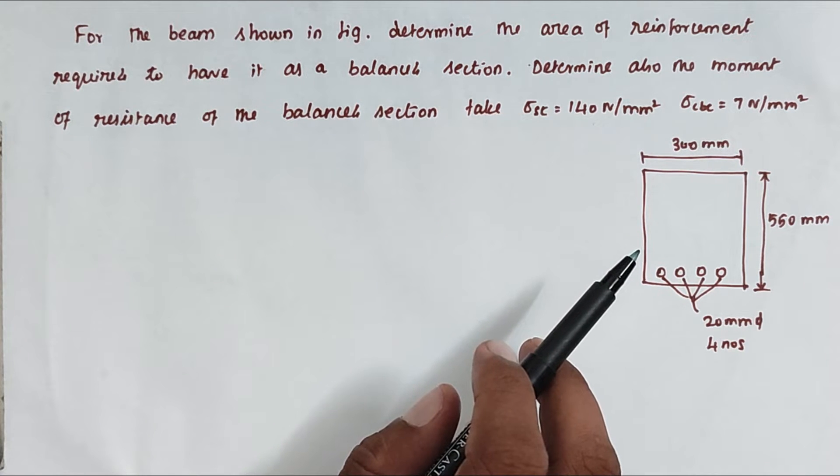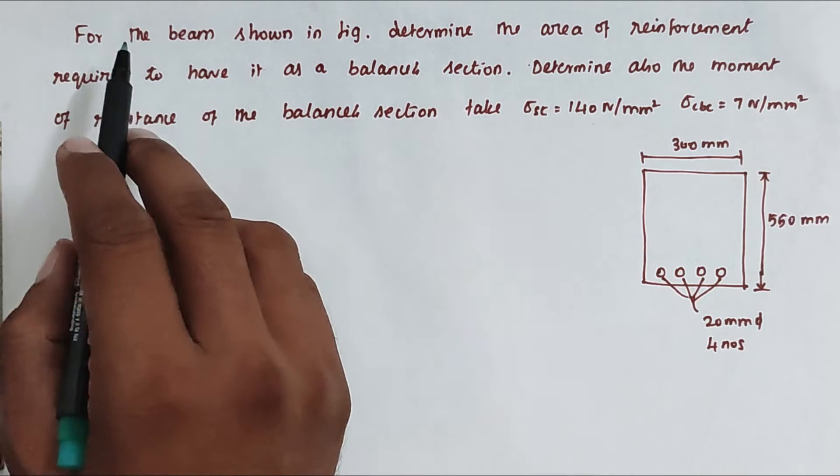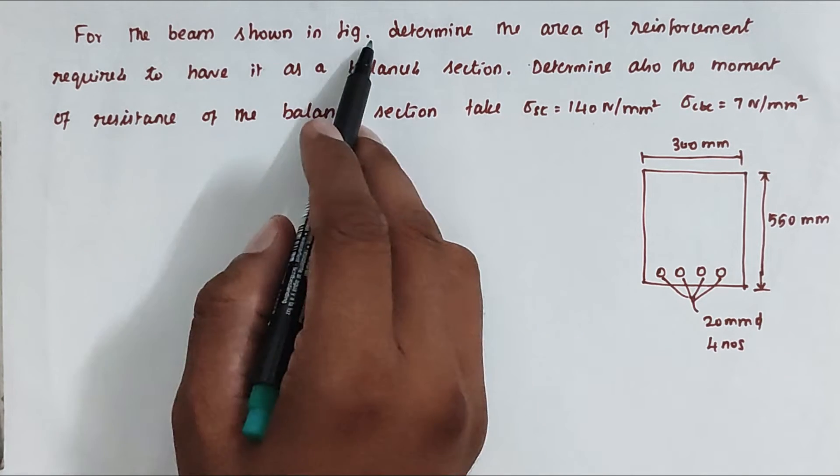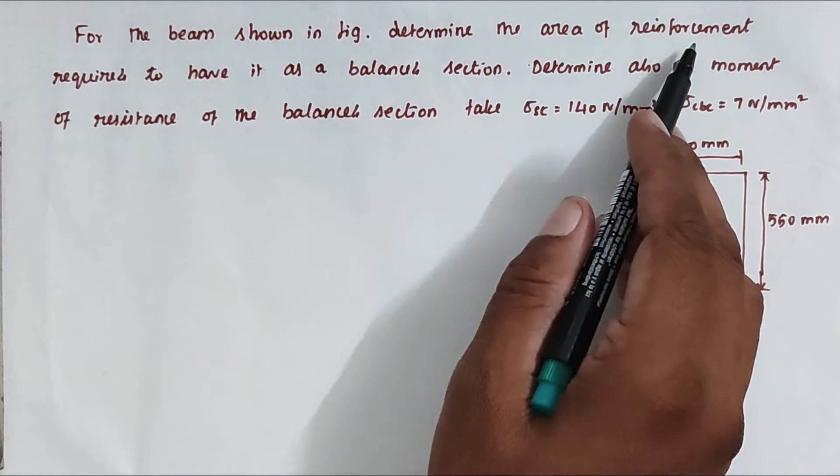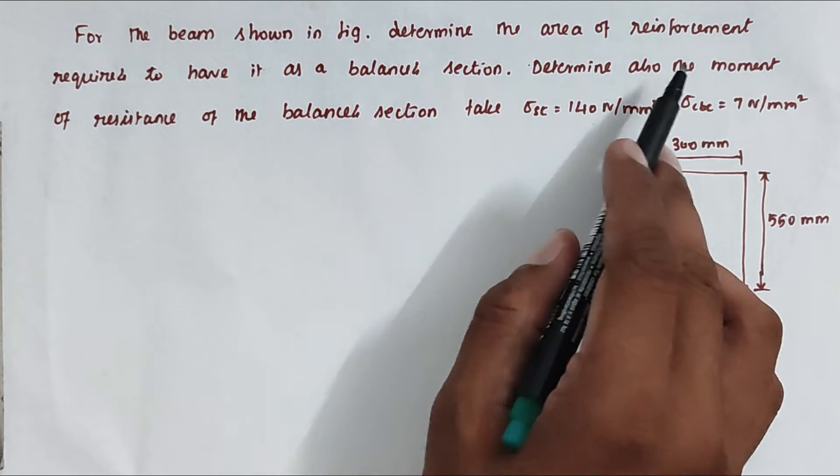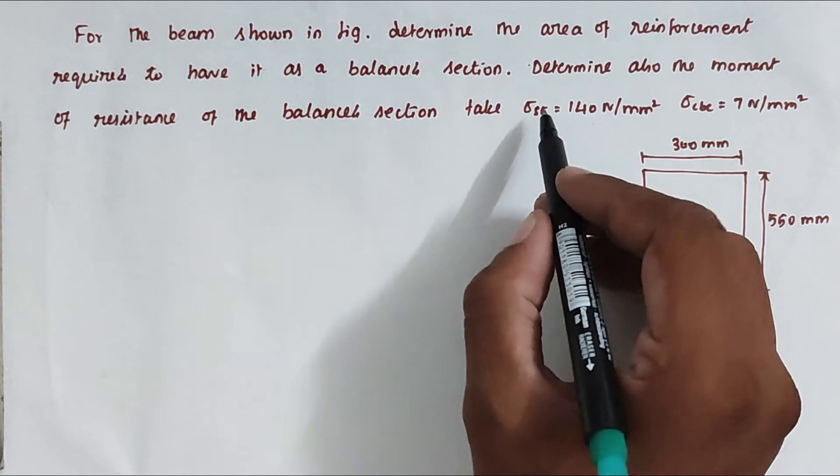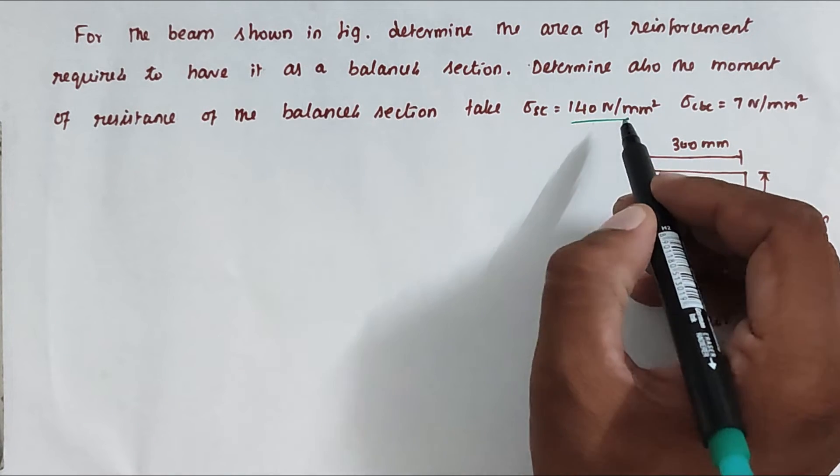Hello friends, welcome to Civil Engineering Exam. Today we're going to see a problem related to RCC design. The problem is: for the beam shown in figure, determine the area of reinforcement required to have it as a balanced section. Determine also the moment of resistance of the balanced section. Take σ_ST = 140 N/mm² and σ_CBC = 7 N/mm².